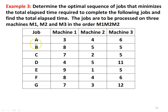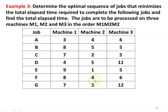There are seven jobs: A, B, C, D, E, F, G, and three machines. The timings are: machine 1 — 3, 8, 7, 4, 9, 8, 7; machine 2 — 4, 5, 2, 5, 1, 4, 3; and machine 3 — 6, 5, 5, 11, 5, 6, 12.